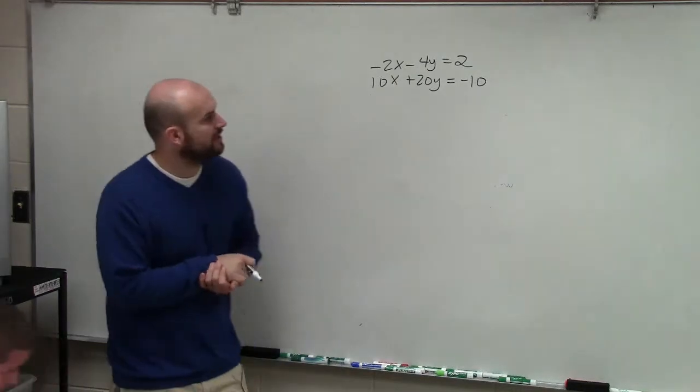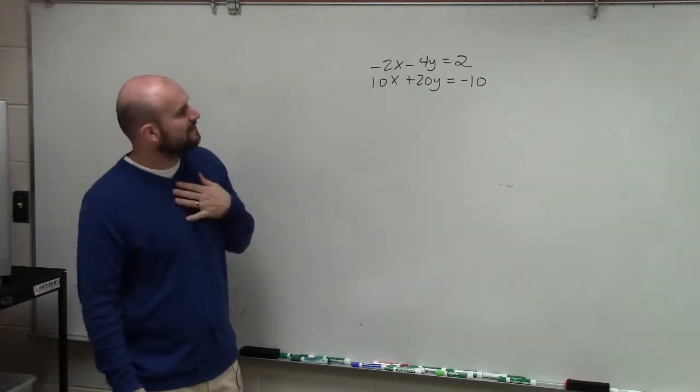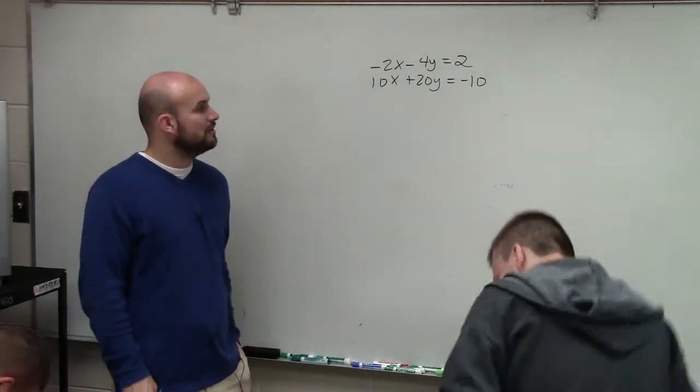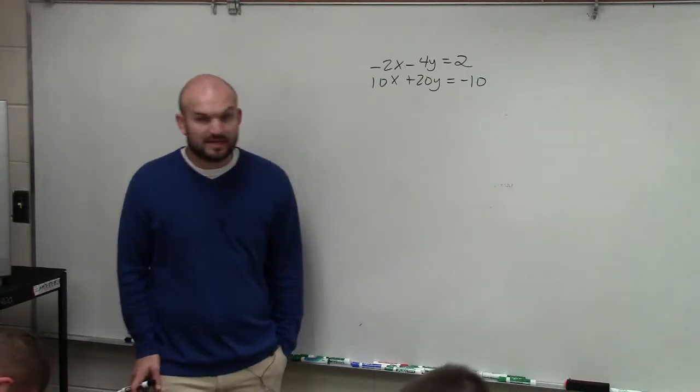The next thing we're going to go over: in this case, I have -2x - 4y = 2 and 10x + 20y = -10.